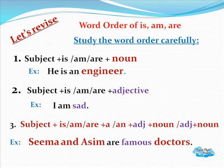Say it out loud with me — keeping in mind that we are practicing positive and negative statements using the auxiliary verbs is, am, are. Study the word order very carefully: He is an engineer. I am sad. Seema and Asim are famous doctors.